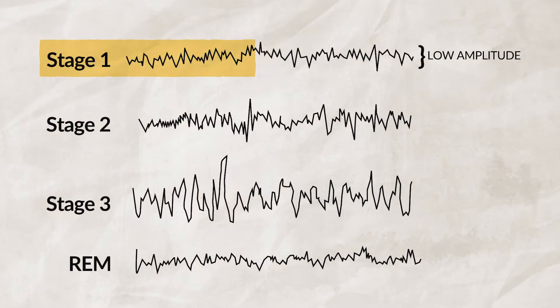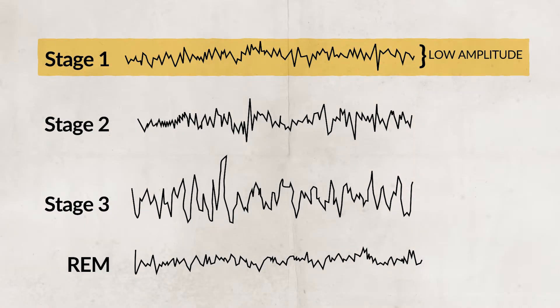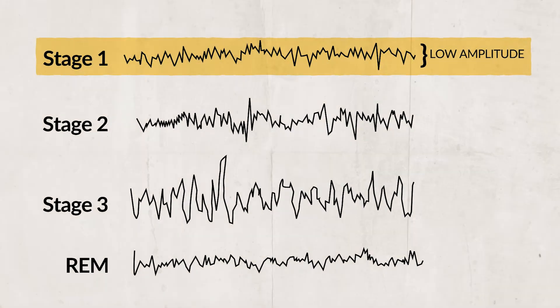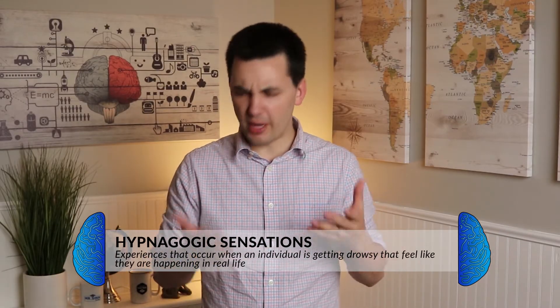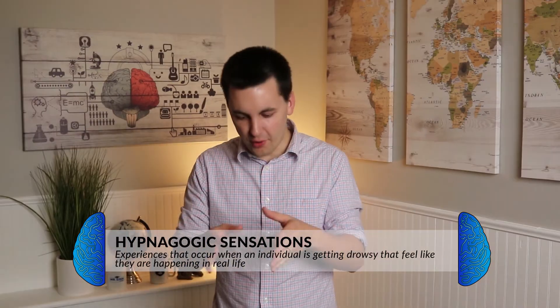The first stage is non-rapid eye movement, Stage 1. This is very light sleep lasting around 5–10 minutes. Your body and mind start to relax and slow down, and it is easy to wake up from — you won't feel very groggy. This is why power naps should be limited to about 15 minutes. During this stage, your brain emits alpha waves, and you might experience hypnagogic sensations — sensations that feel very real, like the feeling of falling and being jerked awake, sometimes called sleep hallucinations.